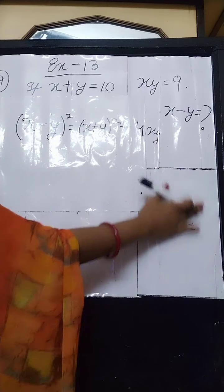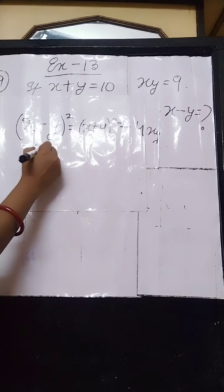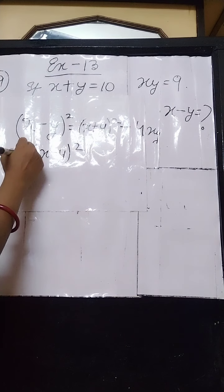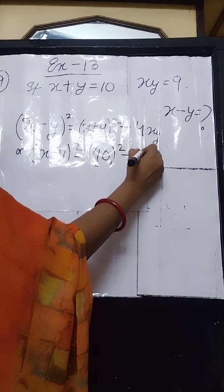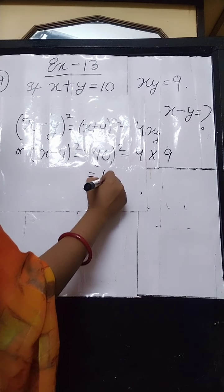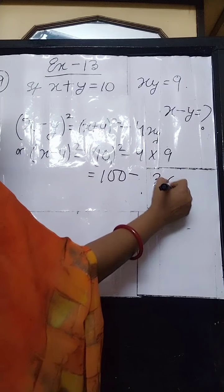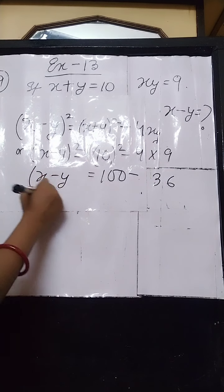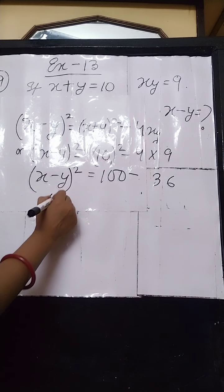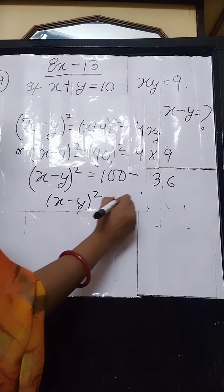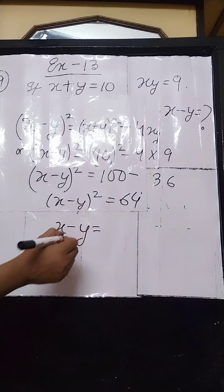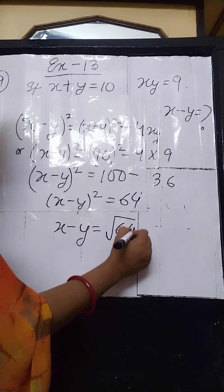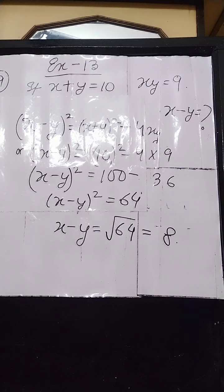Applying the formula, (x-y)² = 10² - 4×9 = 100 - 36 = 64. But we need the value of x minus y, so we remove the square. The square root of 64 is 8, so the value of x minus y is 8. That is how we solve sum number 39.